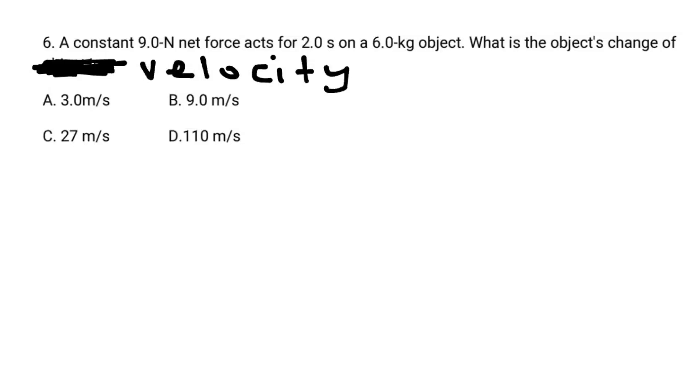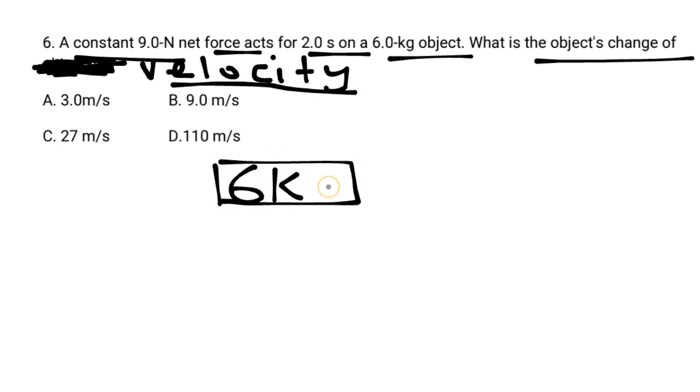Number six: A constant 9.8 Newton force acts for 2 seconds on a 6 kilogram object. What's the object's change of velocity? The object, the 9.8 Newton force applied for 2 seconds on the object, the object is 6 kilograms.